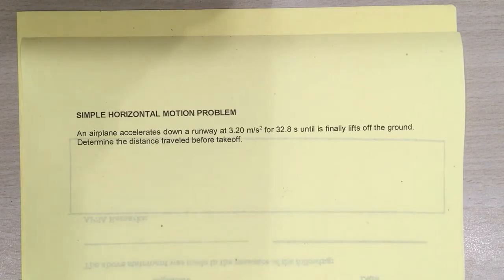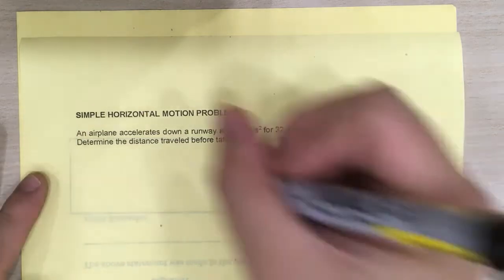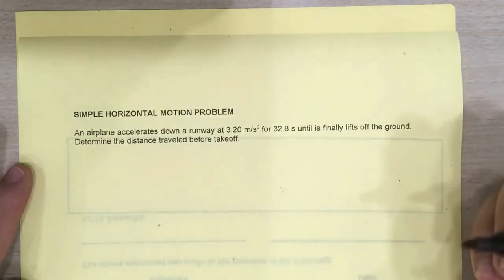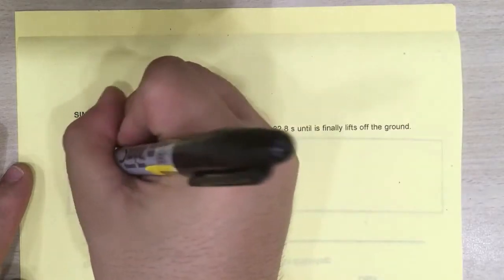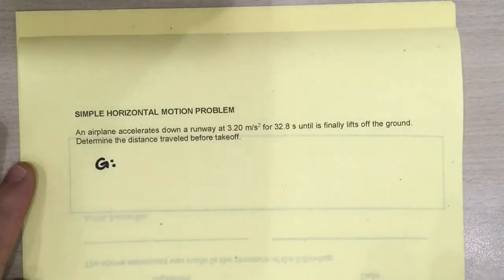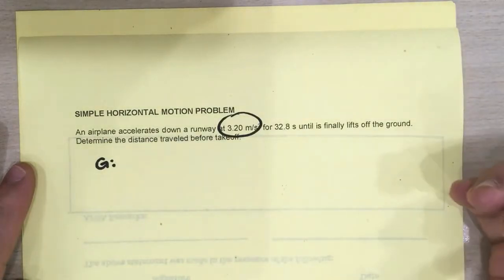Okay, so in order to make it organized, I again reiterated that we will use the GRESA approach. And G in GRESA stands for given. So what are we given in this problem? Well, we're given this value over here. Meters per second squared is an acceleration.